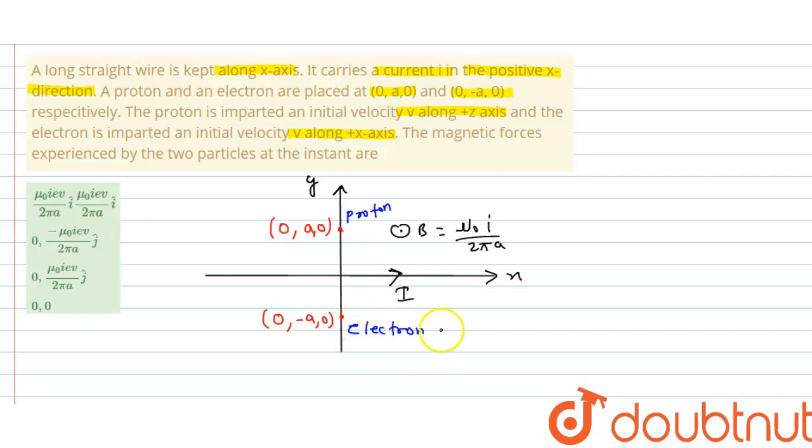And here magnetic field is in inward direction. This side magnetic field is in inward direction and value of magnetic field is μ₀i/2πa in inward direction.